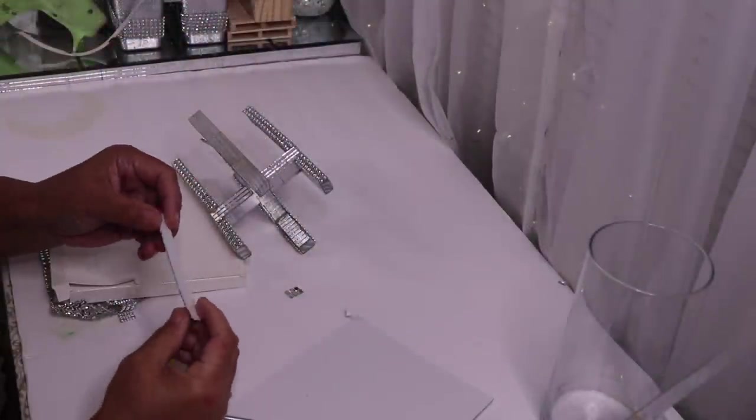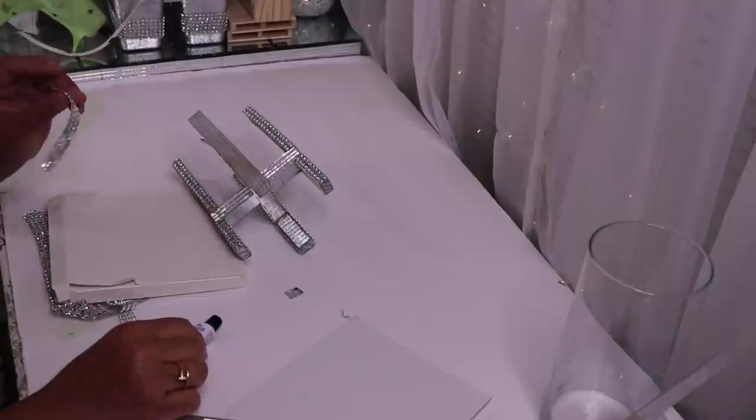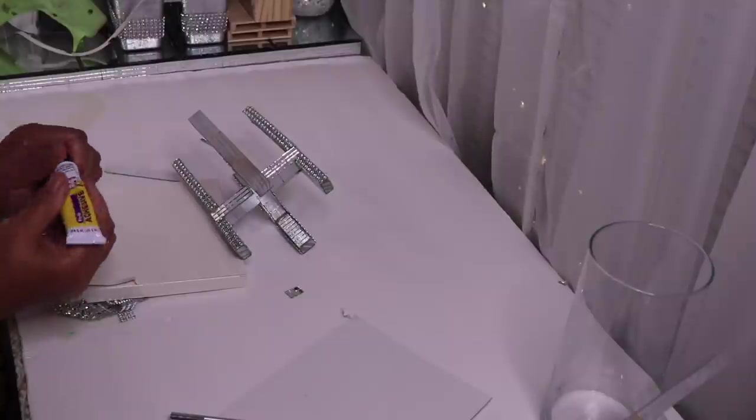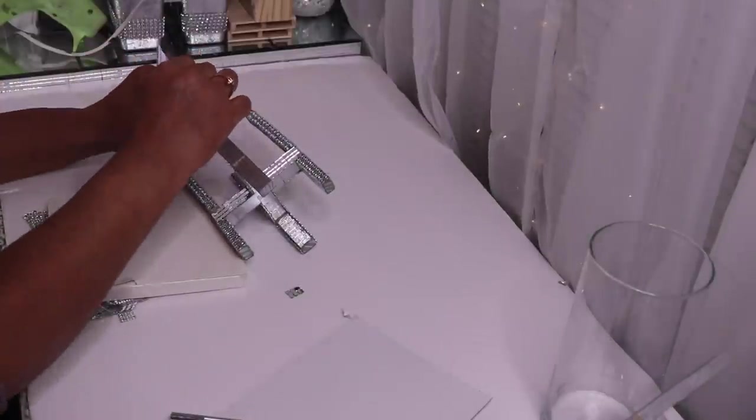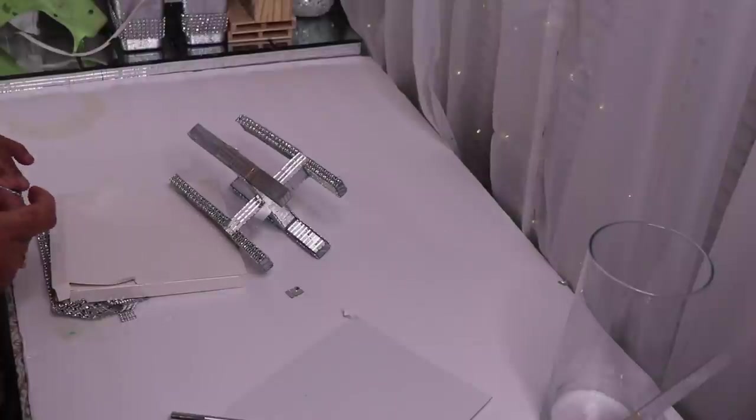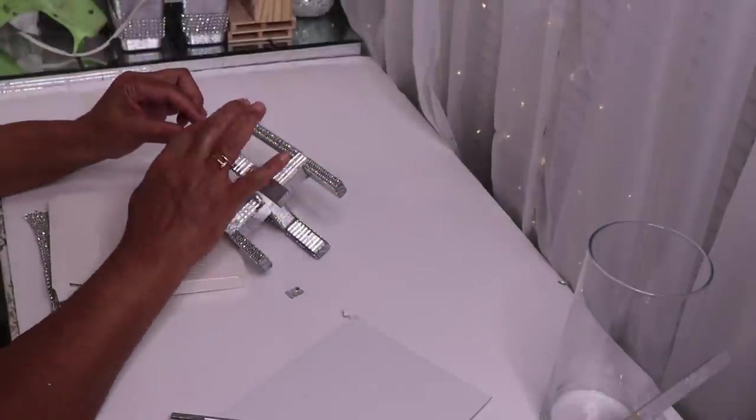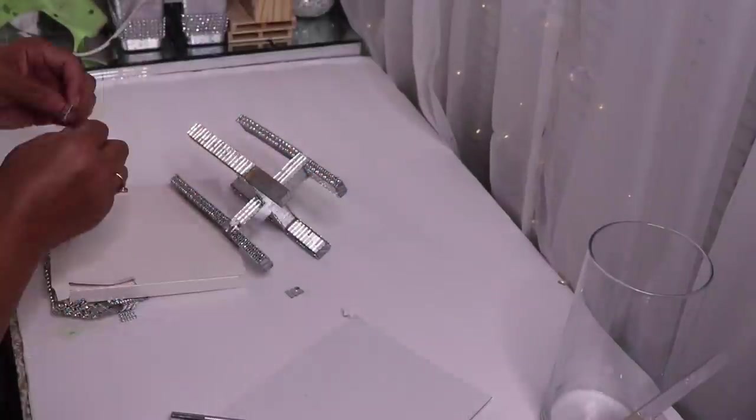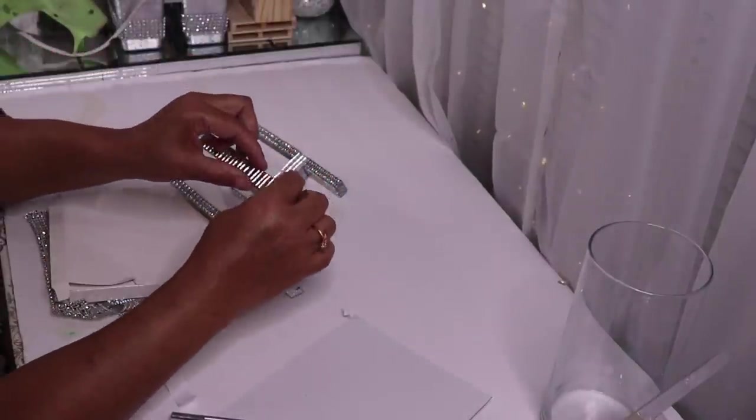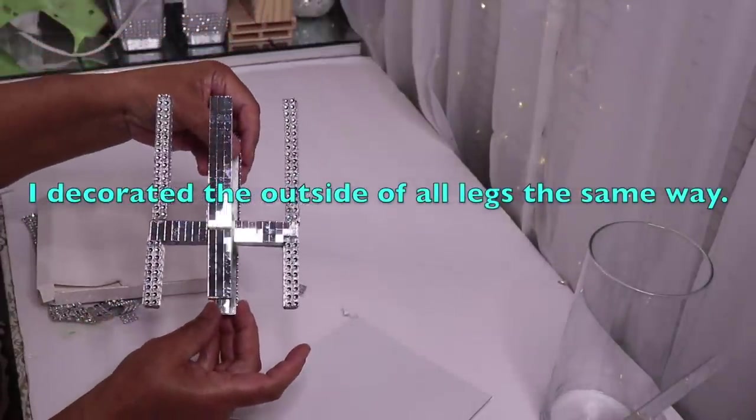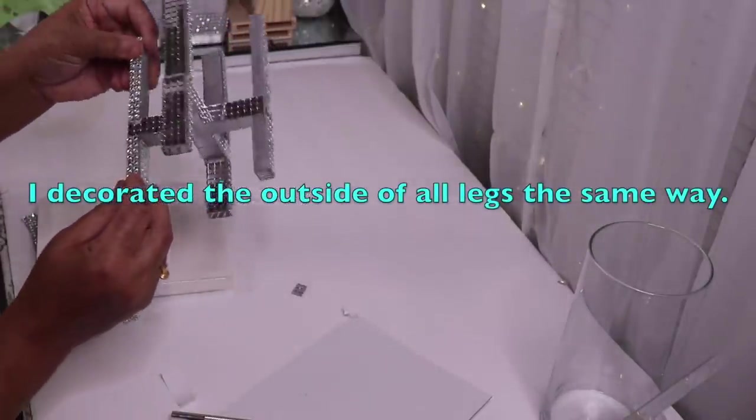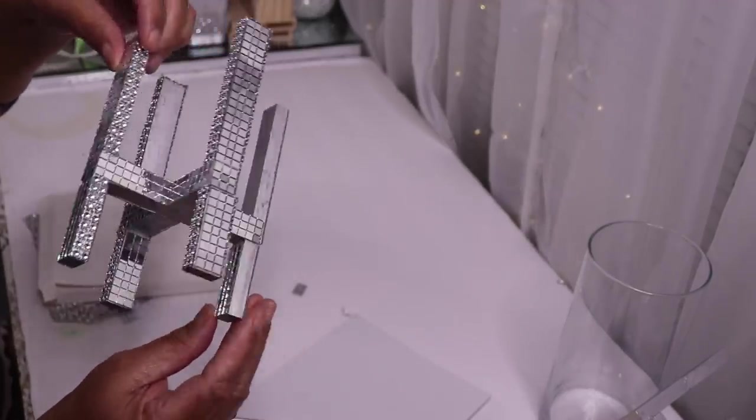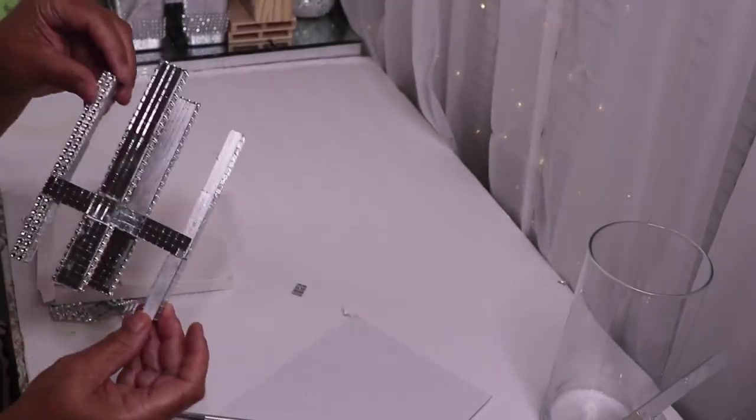So my mirror tiles, they come with adhesive on the back, but sometimes it's not strong enough. So I'm going to go ahead and use a little bit of this Dollar Tree Fix All to help it stay permanent. And I went ahead and did the insides of the bottom as well, and I do all four. Yeah, I think I went ahead and did all four.